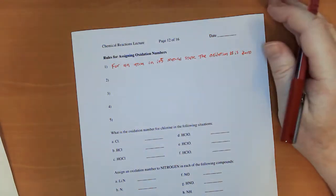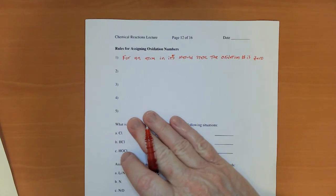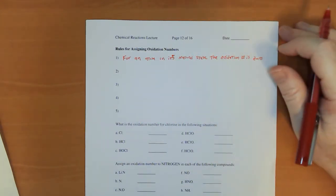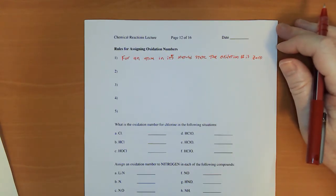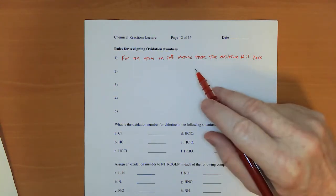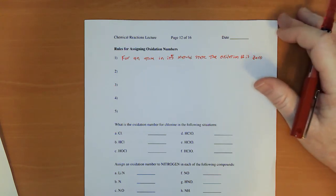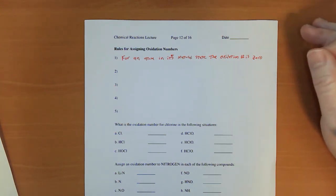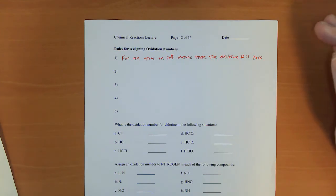Now that does kind of make sense because if you have something in its natural state like a piece of iron and you're holding the iron, you're not getting an electric shock. Just that piece of iron. There it is. If it were charged, you'd be getting an electric shock. That means it's neutral. So elements in their natural state have no charge. Therefore, the oxidation number on those elements would have to be zero.